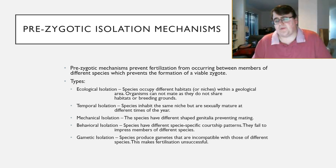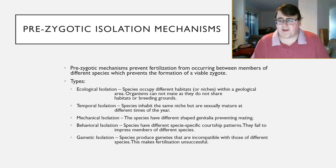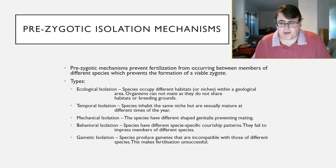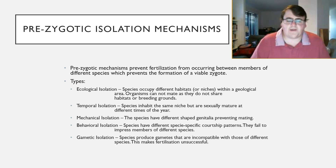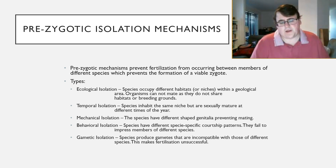Prezygotic mechanisms are ones that prevent fertilization from occurring between members of different species — they prevent the formation of a viable zygote, so the zygote is never created. There are five different prezygotic isolation mechanisms: ecological isolation, temporal isolation, mechanical isolation, behavioral isolation, and gametic isolation.